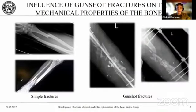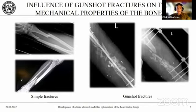However, installing an exfix device according to the scheme used for simple, non-comminuted bone fractures is unacceptable, since the rods located near the fracture site will enter the bone tissue, which has changed in biomechanical characteristics. These changes are caused by the formation of a zone of shockwave osteoporosis and linearly decrease with increasing distance from the defect. Therefore, alternative locations of rods were proposed.